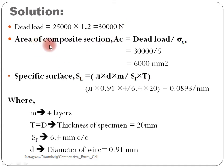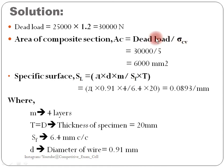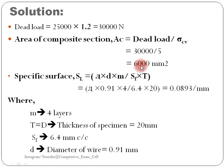After the design load, we have to calculate the area of the composite section. The composite section consists of slurry and reinforced wire mesh. Area of composite section is equal to design load divided by sigma cv. This is the rearranged form of sigma equals load divided by area. So 30,000 divided by 5 gives area equal to 6,000 mm².